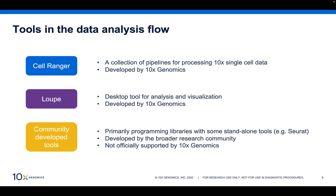Before we dive into the analysis workflow more, I want to again call attention to the software tools used in single-cell RNA-seq data analysis. First, there is CellRanger, which is developed by 10x Genomics. It is a collection of pipelines for processing 10x single-cell data. Second, we have the Loupe Browser, which is also developed by 10x Genomics — it is a desktop tool for interactive analysis and visualization of your data. Third, there are community developed tools. Later in this workshop series, we'll touch upon trajectory analysis, which is one example of an analysis enabled by community developed tools. These tools are primarily programming libraries developed by the broader research community.